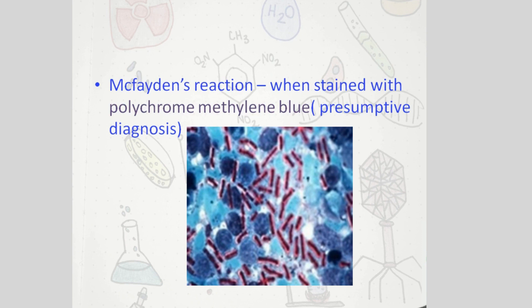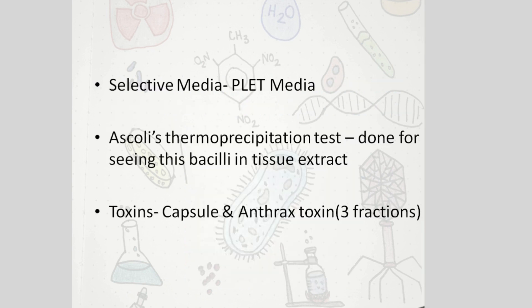Next is the McFadyen reaction. This is very important because when you stain the bacilli with polychrome methylene blue for a few seconds, under the microscope you'll see a purplish color material around the bacilli. This purplish color is actually the capsule, which is characteristic of anthrax, and it is used as a presumptive diagnosis.